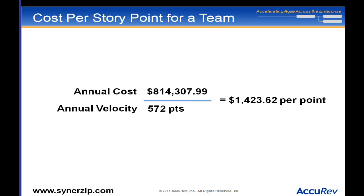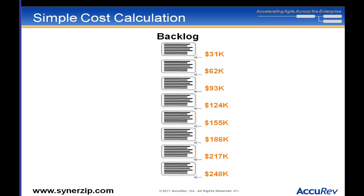Dividing that out gives roughly $1,400 per story point. Then looking at it per iteration: 22 points times $1,400 is about $31K per two-week iteration. Once I have that metric established, I don't have to recalculate it all the time — I know that every two weeks that team costs me $31K fully loaded. If I wanted to do that same work somewhere else, it needs to cost me less than $31K for that team, assuming I'm getting the same velocity.